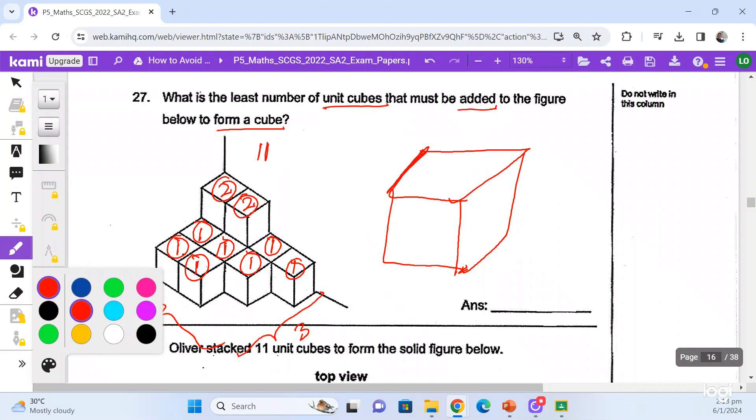You count. You count like one, two, three, four. So the four cubes form one side of this solid figure. And then over here, another three cubes that form the other side of the solid figure.